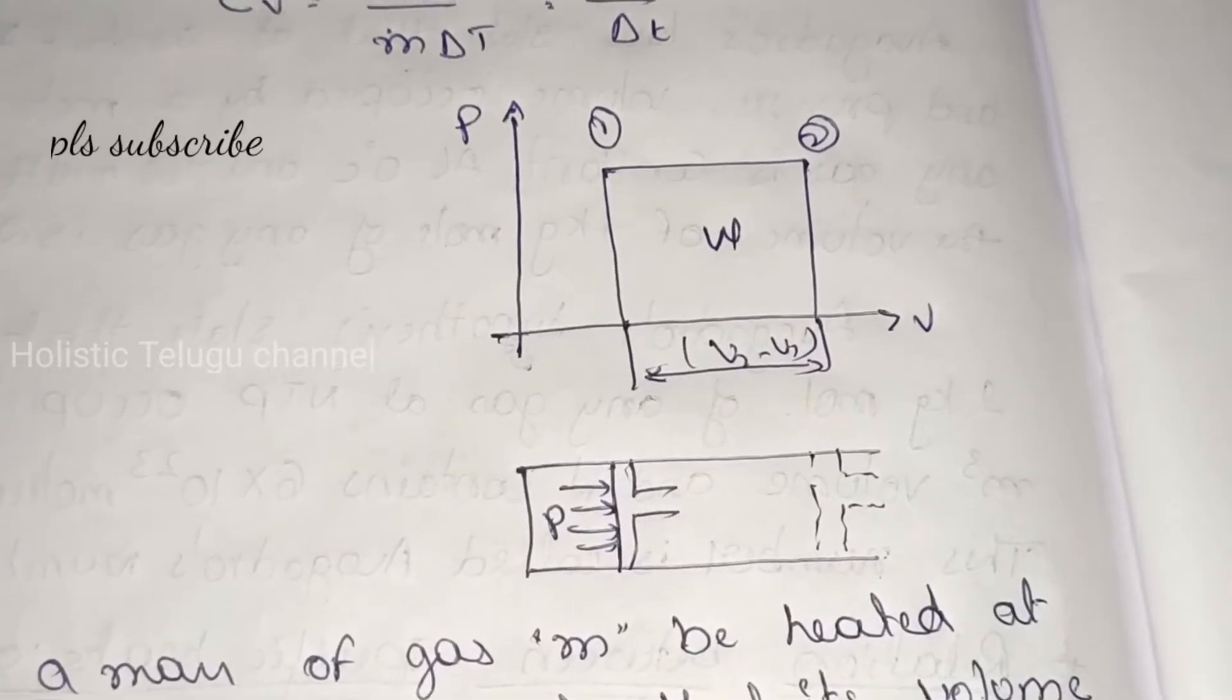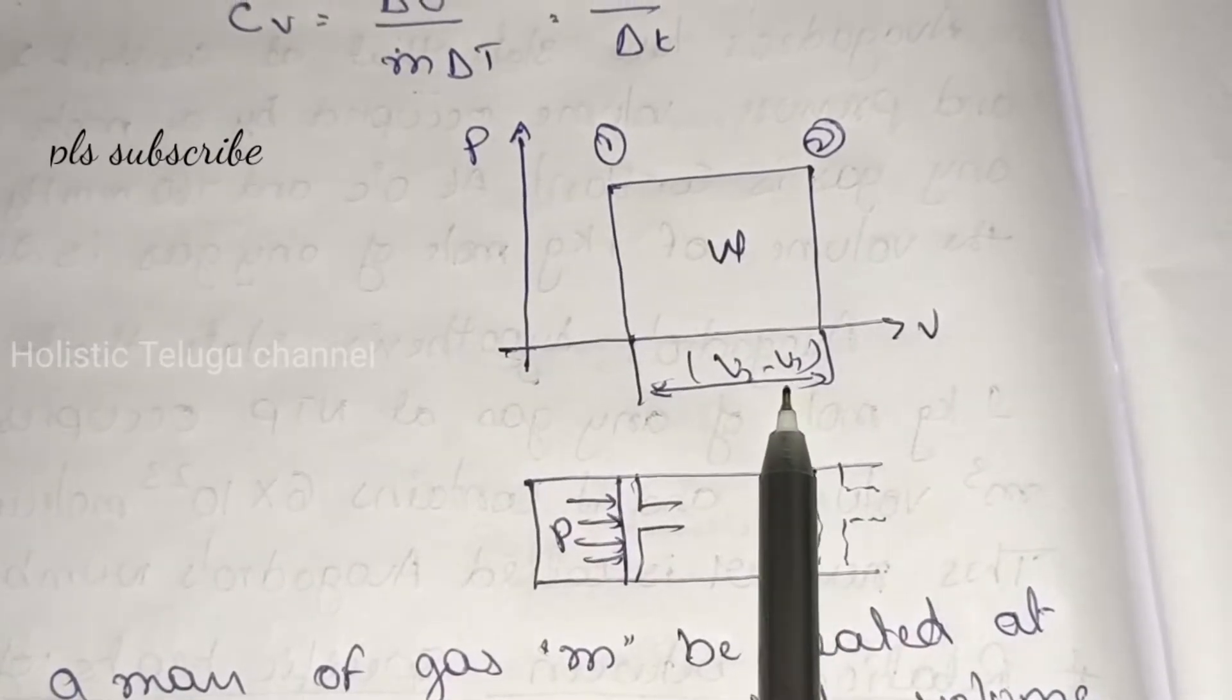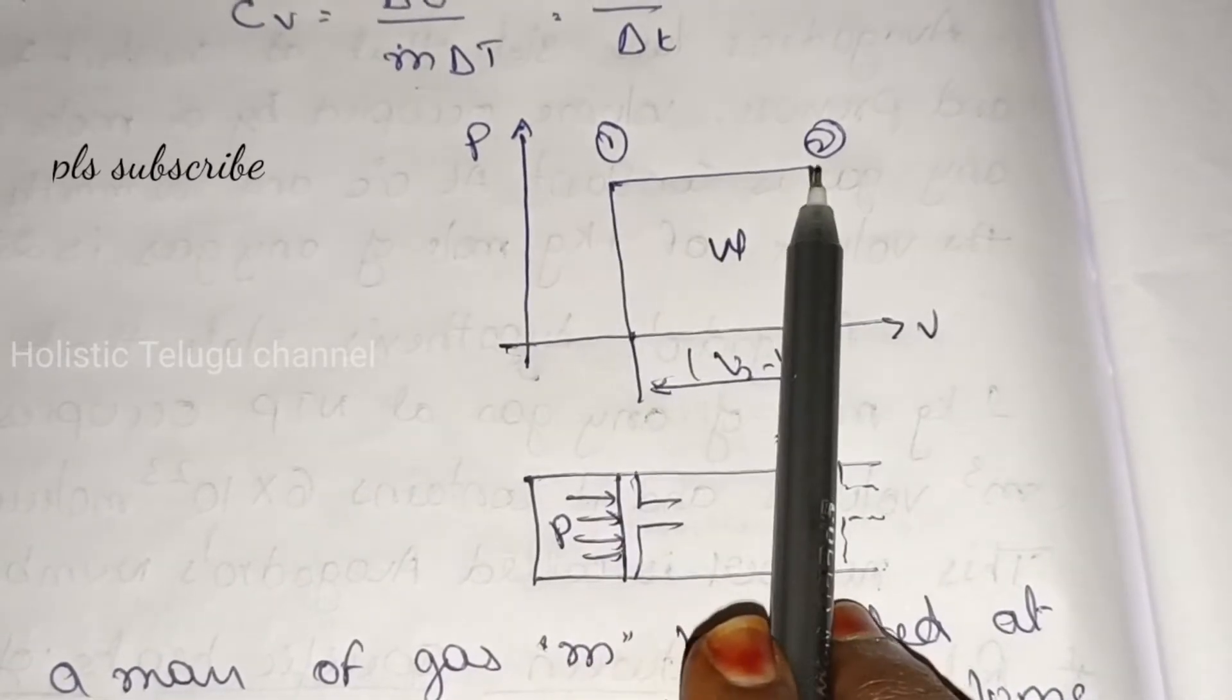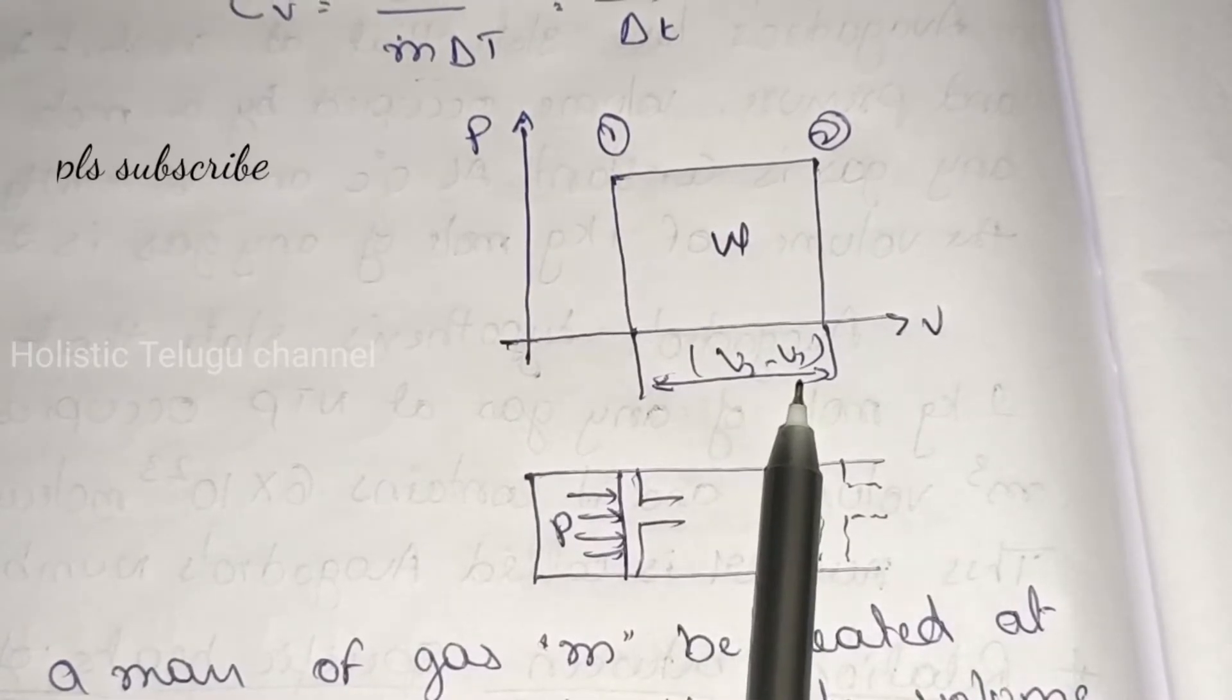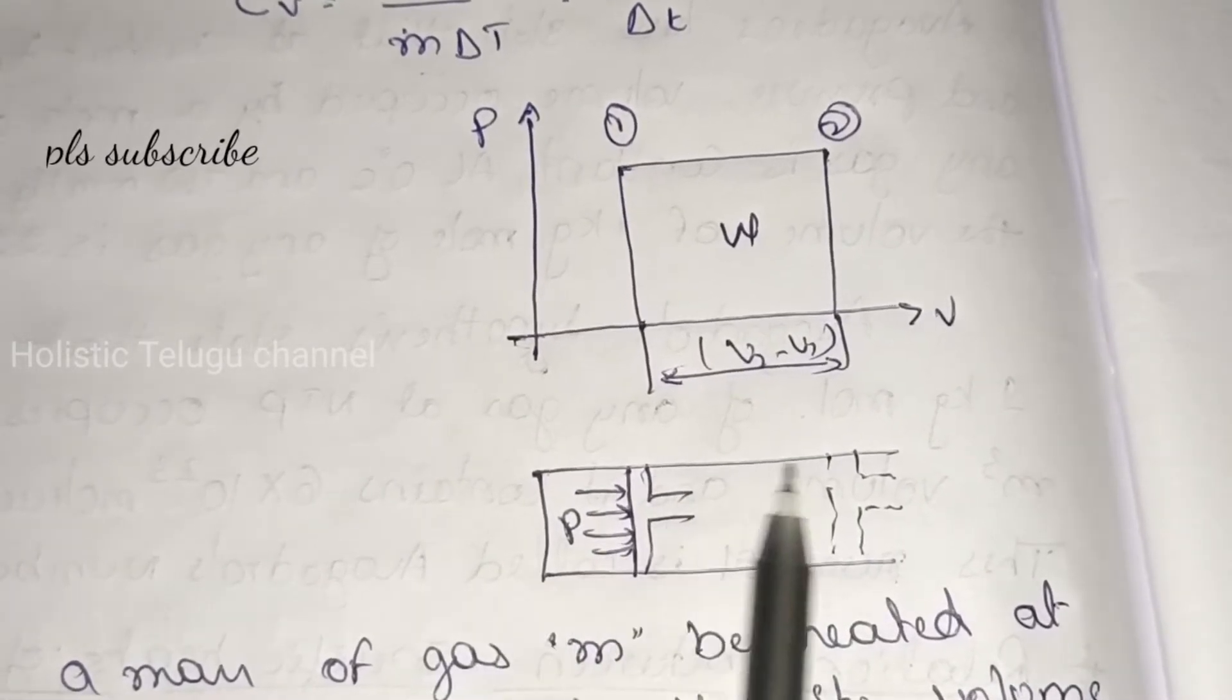So here we have the PV diagram. In this PV graph the process goes from 1 to 2. Here the value changes like this, V2 minus V1. Here the volume is changing.